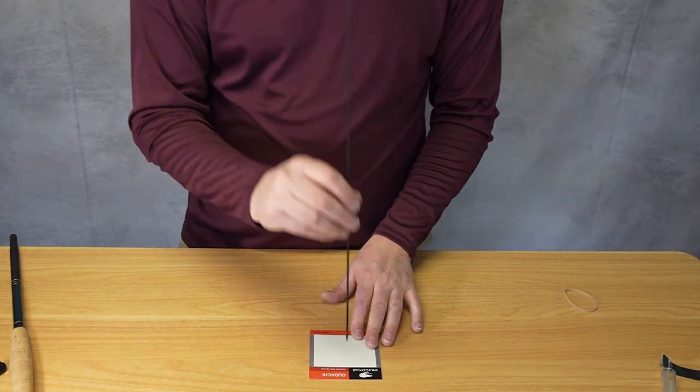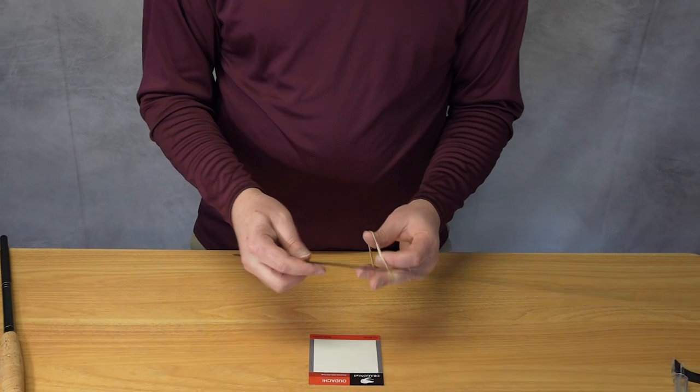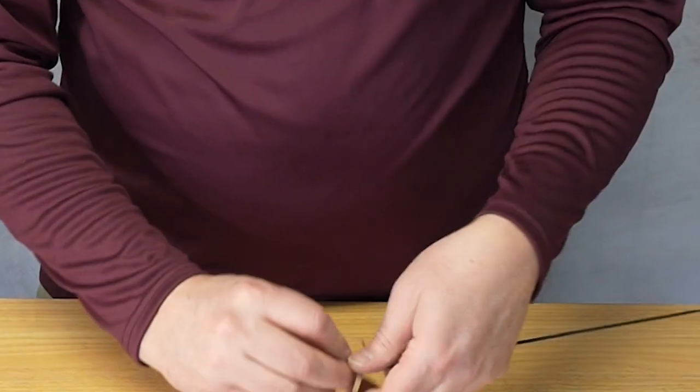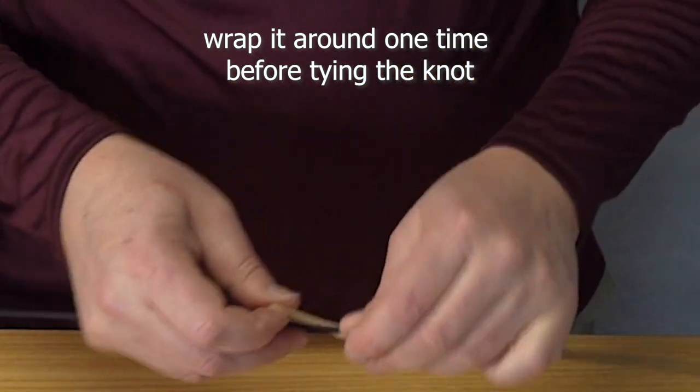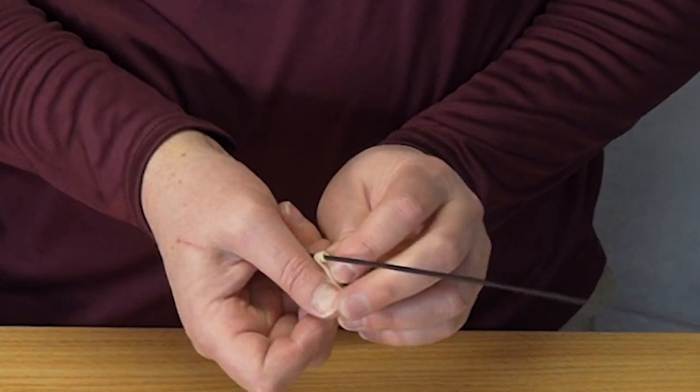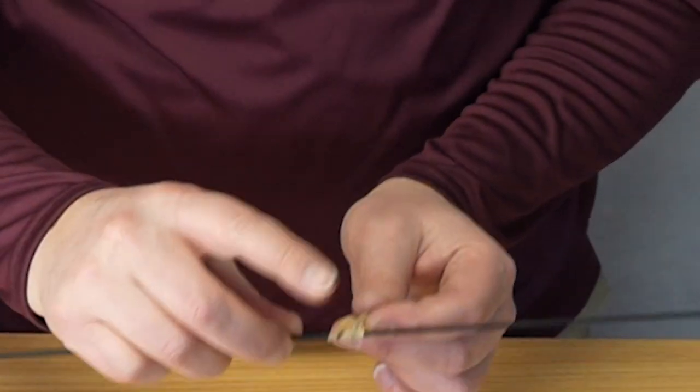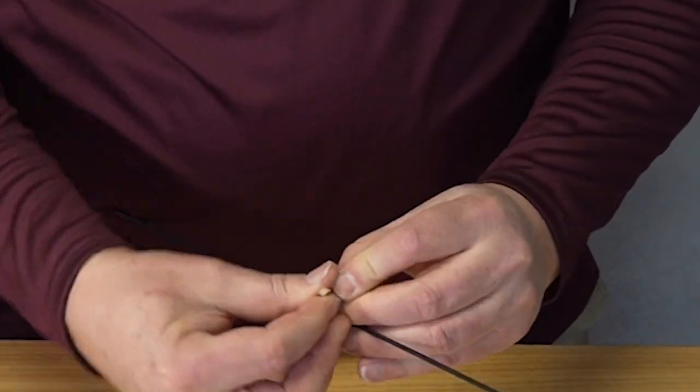Since I don't want to dent my table, I've got this cardstock I'm going to use. You take a rubber band and we're just going to tie an overhand knot. Actually, you might wrap it around one time so you've got a lot of rubber band on there, and then tie the overhand knot.